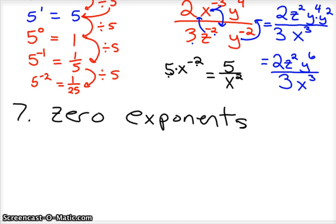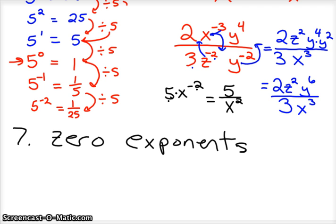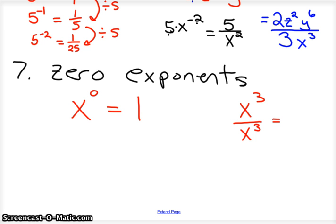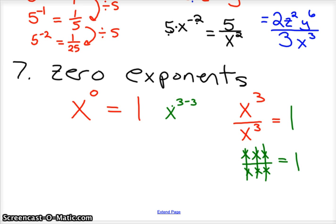We already touched on it: 5 to the 0 equals 1. That's the case for all zero exponents — anything to the zero power is 1. We can prove it: x to the third divided by x to the third — by crossing out, that's 3 x's over 3 x's, so each x divided by x is 1, giving 1. Using the quotient rule, you subtract exponents: x to the 3 minus 3 is x to the 0. So anything to the 0 power is 1. That's a quick proof of the zero exponent rule.